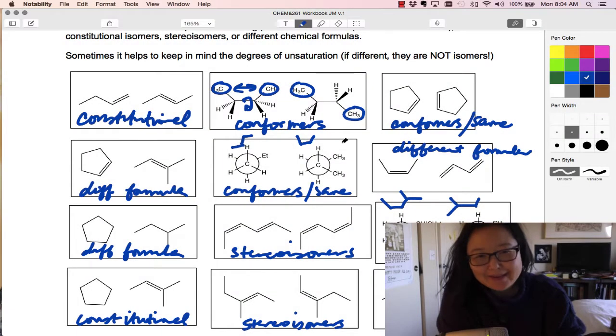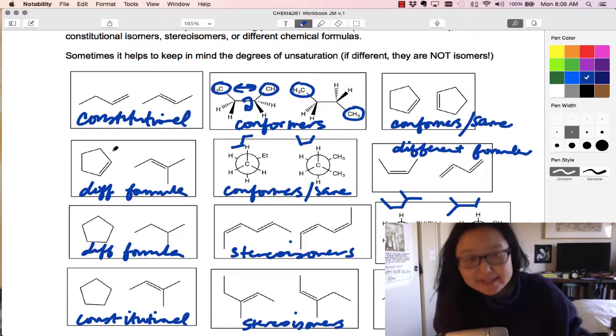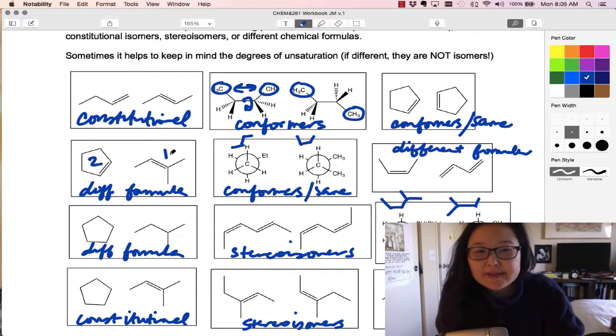All right, guys, we're back, and we've got different formulas here. And one way I can tell right away is the first thing you want to do is just check if they have the same number of carbons, five carbons, five carbons. And then look for degrees of unsaturation. So we have a ring and a double bond on the left, two degrees of unsaturation, and one degree of unsaturation. So they've got to have different numbers of hydrogens. So this is a different formula.